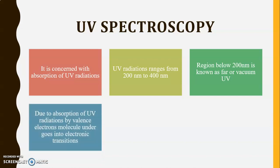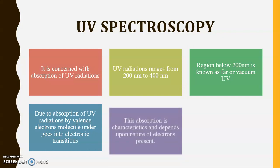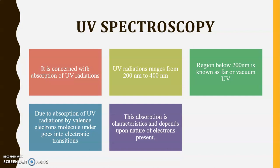Due to the absorption of UV radiations by valence electrons, a molecule undergoes electronic transitions. In UV spectroscopy, the three energy levels involved are electronic, vibrational, and rotational. However, due to the absorption of UV radiations, only transitions between electronic energy levels take place. This absorption is characteristic and depends upon the nature of electrons present in the molecule.